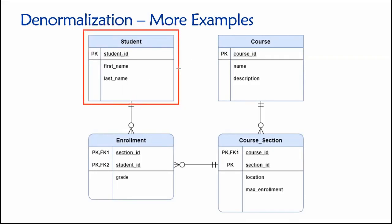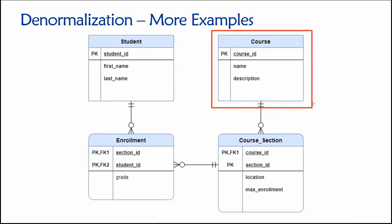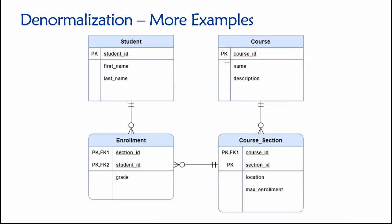Here in the upper left, we have a student table where we're storing information about students. I've kept this very simple: student ID as the primary key, first name, last name — no additional attributes. Over here in the upper right, we have a course table, where we give each course a unique ID, and then maybe a name and a description of the course.